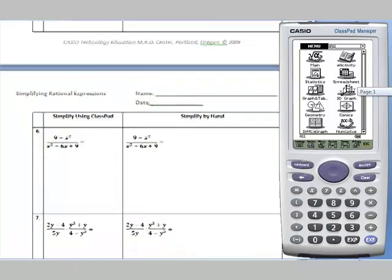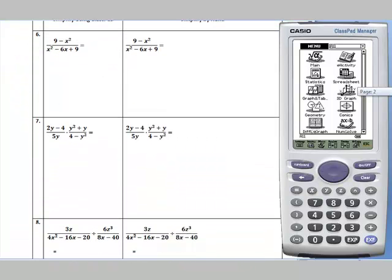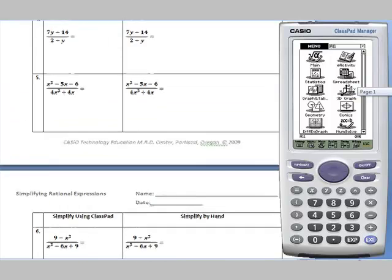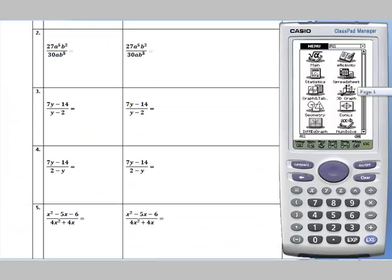Each one they simplify using the ClassPad on the left side and then simplify it by hand on the right side to arrive at the same answer.